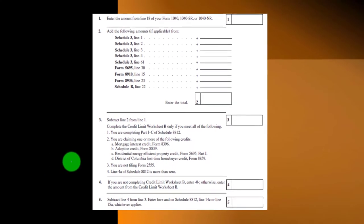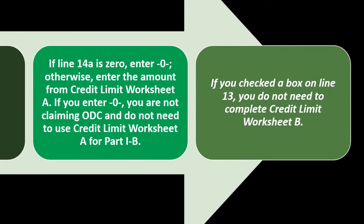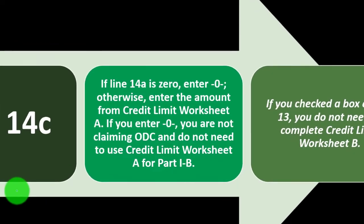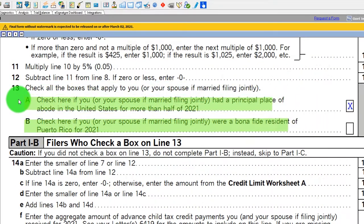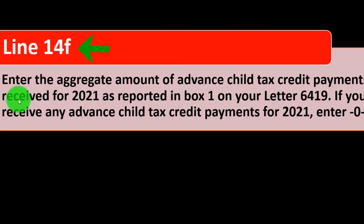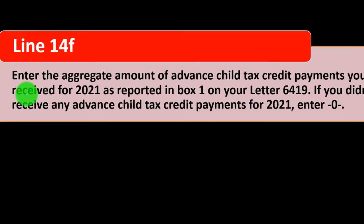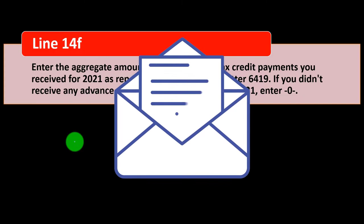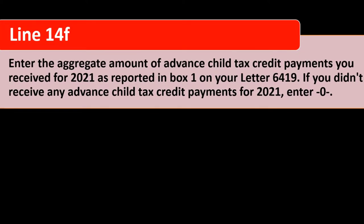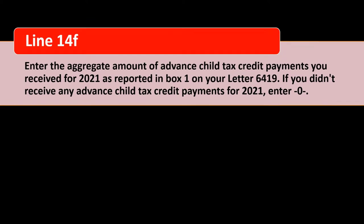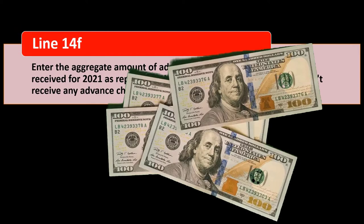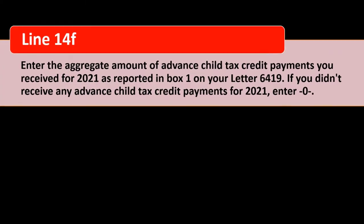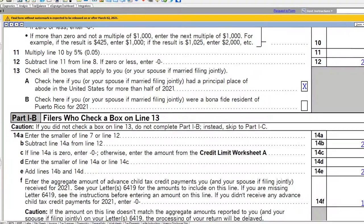Line 14F: enter the aggregate amount of advanced child tax credit payments you received for 2021, as reported in box one on Letter 6419 — the letter from the IRS providing your advanced child tax credit information. If everything was correct, that would generally be about half of the total child tax credit. However, if you're subject to income phase-out limitations, the IRS may have gotten it wrong, since the phase-outs were based on prior-year income estimates rather than your actual 2021 income. If you did not receive any advanced child tax credit payment, enter zero. In this example I'm entering $1,175 for line 14F.